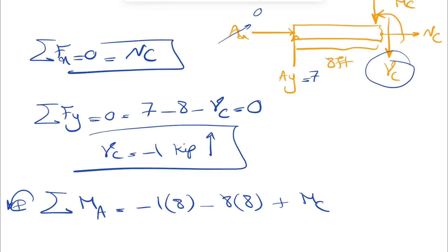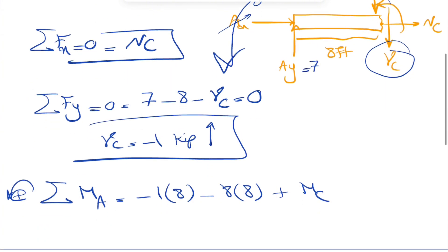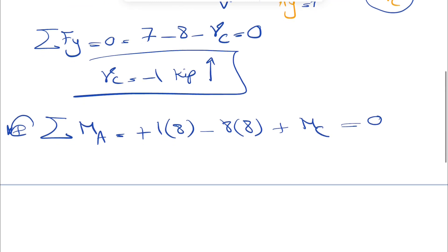I made a mistake here. Vc was actually upward. So the moment that it's going to make is going to be in this direction, or counterclockwise. So this one's positive. So plus 8 minus 64 equals 0. So our Mc would be 7 times 8, or 56 kip foot.